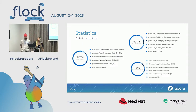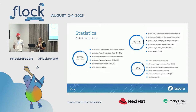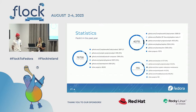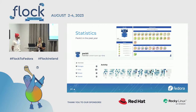Some statistics from Packit for the past year: the most used job is RPM builds and COPR builds — 76,000 builds in the past year. Testing Farm usage: more than 40,000 Testing Farm runs. For downstream release automation, there were more than 700 sync runs from upstream to downstream. You can also see Packit bot activity in dist-git — very active in recent months — plus some badges we've earned.